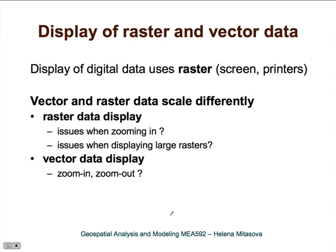First, let's look at the difference between display of raster and vector data. It is important to remember that all display of digital data uses raster because our screens are raster. However, raster and vector data behave differently. What happens when we display raster data such as imagery or digital elevation models when we zoom very closely? And what kind of issues do we have to face when displaying large datasets that have more grid cells than we have pixels available for our display?